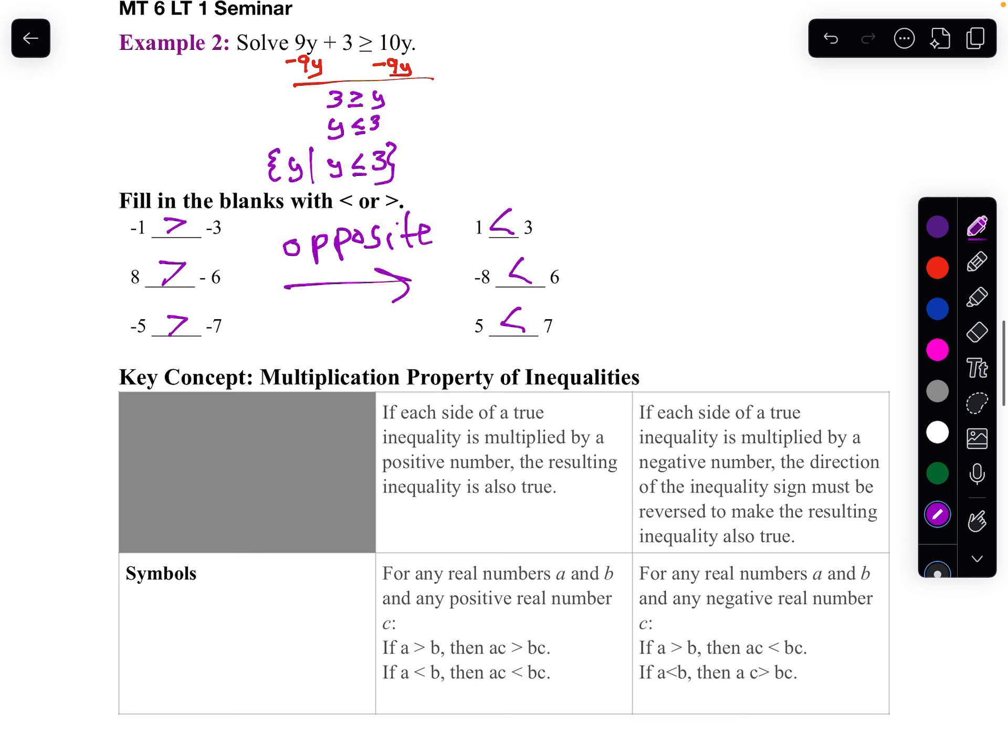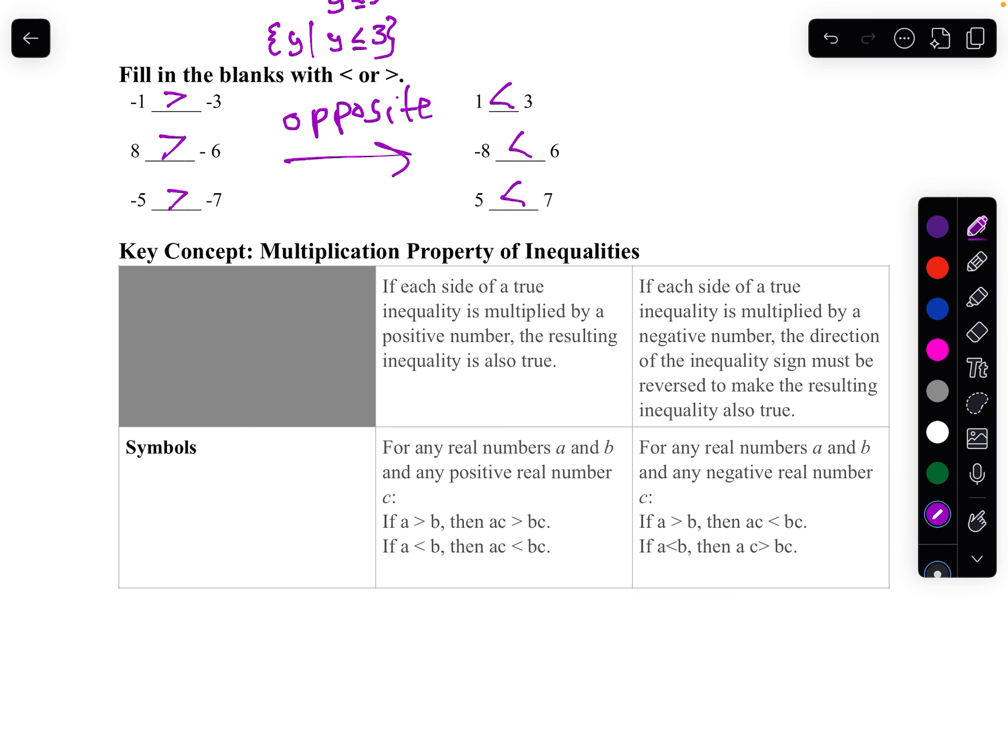Well, how do I tell when I flip it? Here's what happens. If you multiply or divide both sides by a negative number, then you flip it. If it was greater than, it becomes less than. If it was less than, then it's greater than.